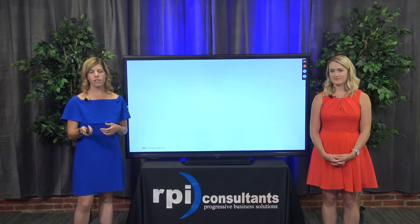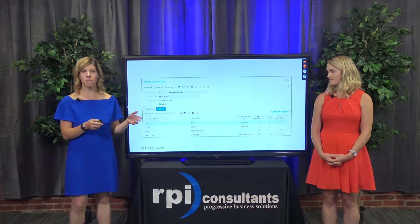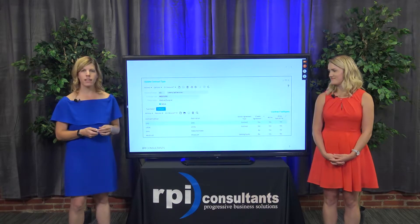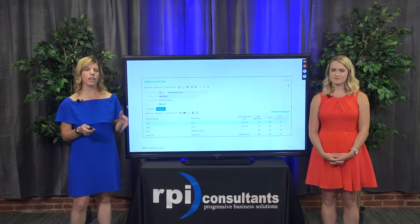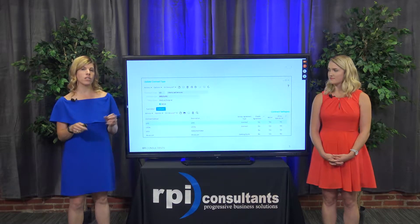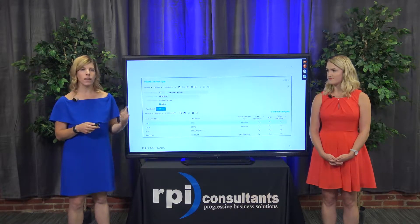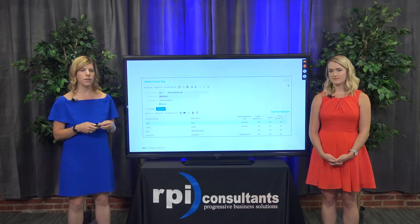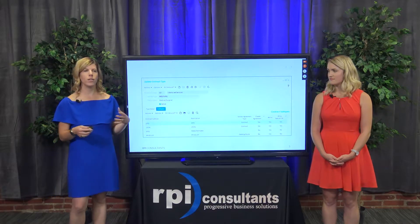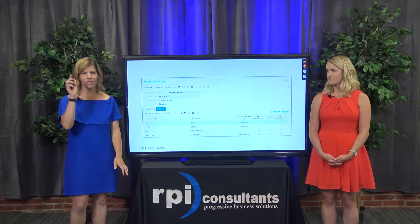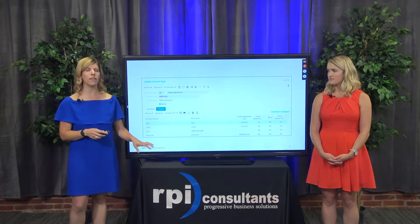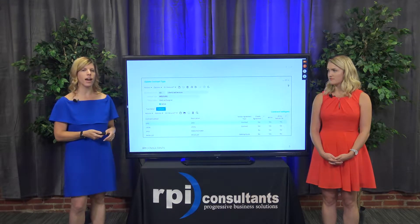Going back to the contract management best practices webinar on YouTube, it all ties back to the contract type — whether you're allowing specials on a contract and whether you're allowing those special items to carry over into PO-25. There's also a deeper level of control: if you have a 20,000-line contract and want to account for 5,000 of them but not push them over into PO-25, you can do that at the line level.